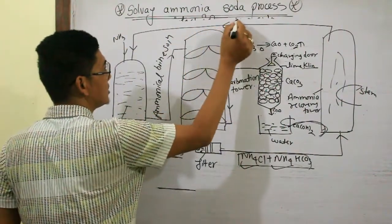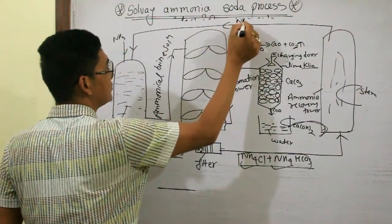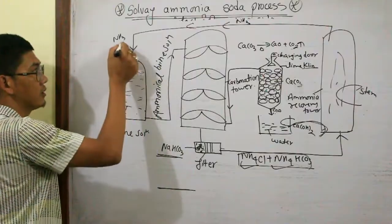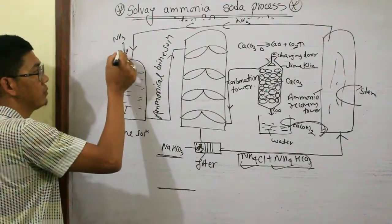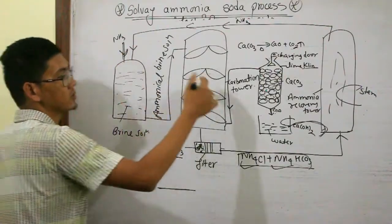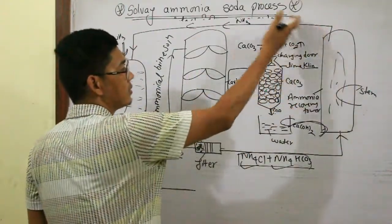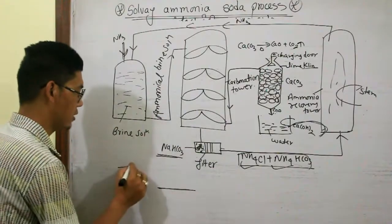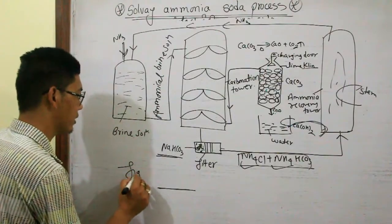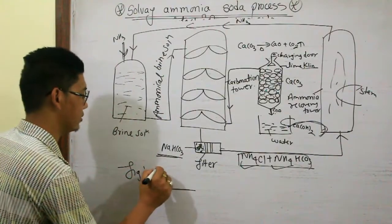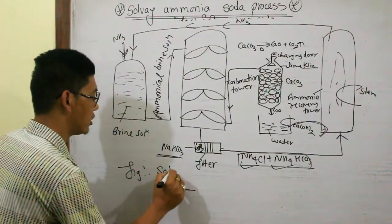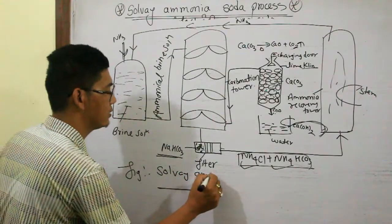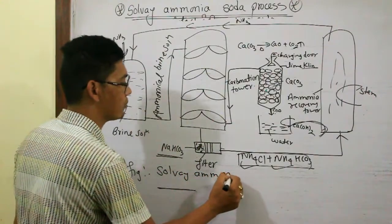The recovered ammonia gas is recycled back into the first brine solution. This is the ammonia recovery step. The ammonia is put back into ammonium recovery to continue the process. This is what is shown in the figure of the Solvay ammonia soda process.